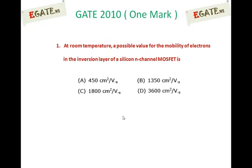The first one is: at room temperature, a possible value for the mobility of electrons in the inversion layer of a silicon n-channel MOSFET is?